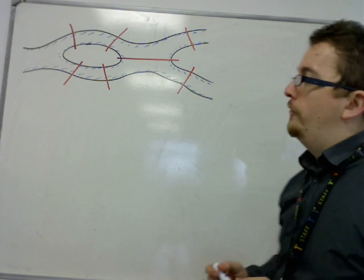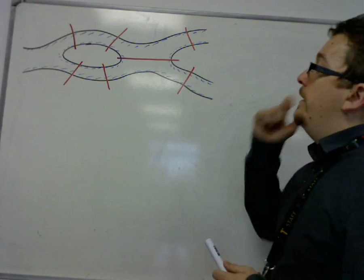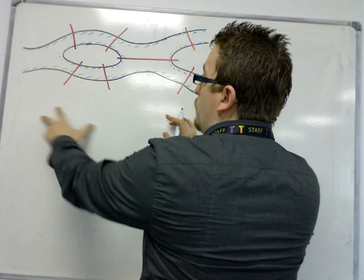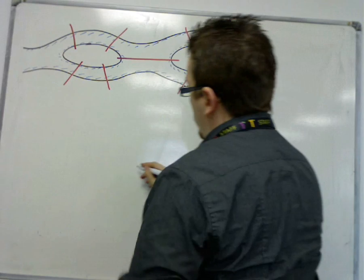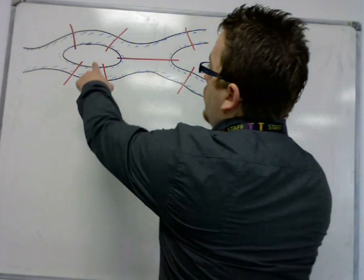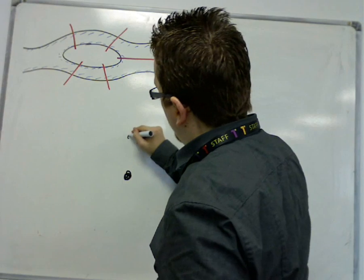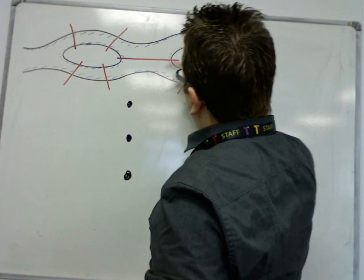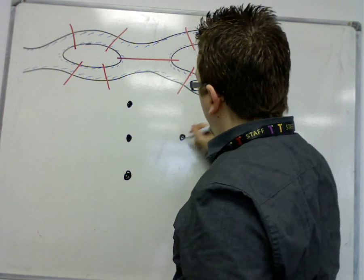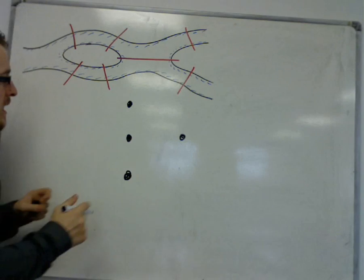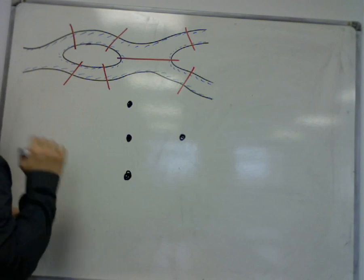In order to solve this problem, Euler looked at representing each landmass as a single point. So this landmass becomes one point, this landmass another point, this one another, and finally the fourth point there. Then you can join up the points with the bridges.